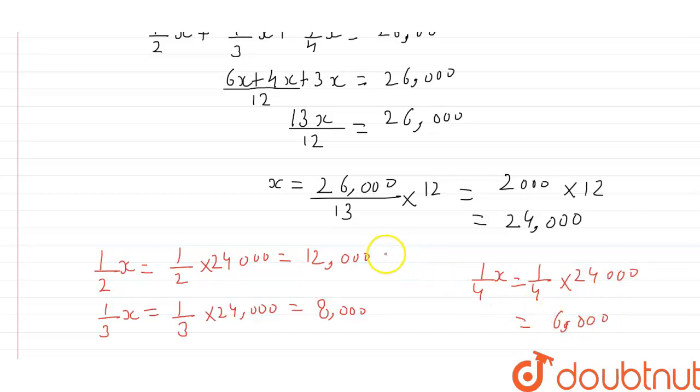So, if we divide 26,000 into 3 persons with the ratio of 1 upon 2, ratio 1 upon 3, ratio 1 upon 4, it will be 12,000, 8,000 and 6,000.